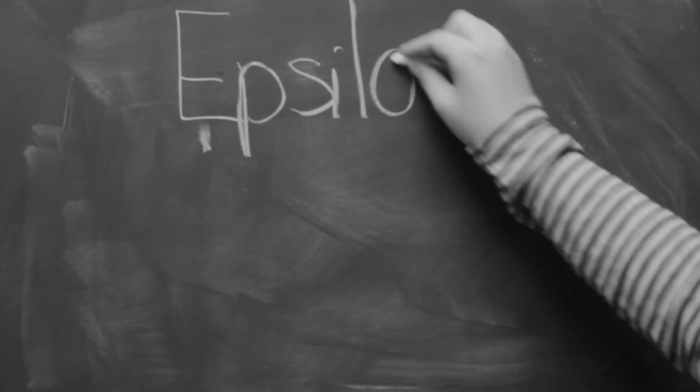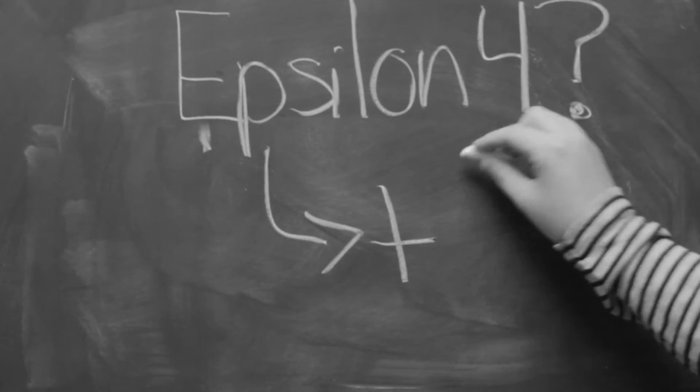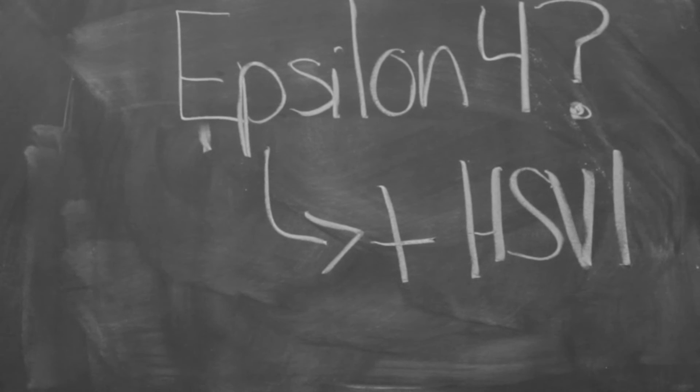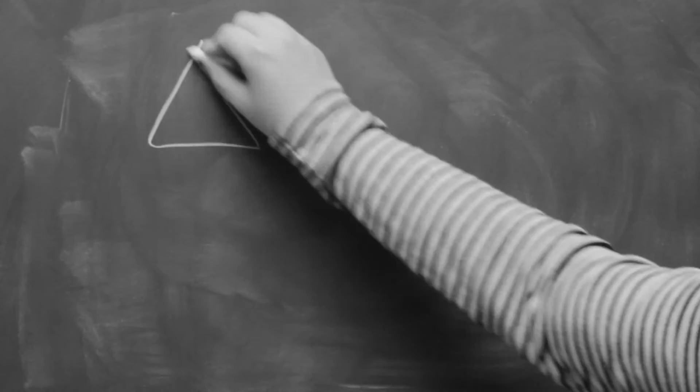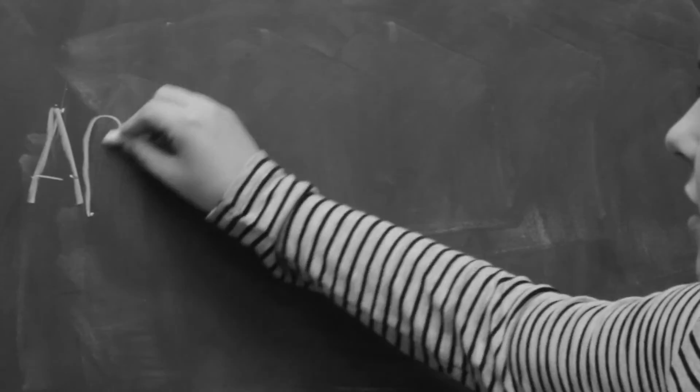Remember how we talked about the ApoE mutated variant Epsilon-4? Well, studies have shown that patients who have this mutation as well as infection by HSV increase the chances of developing Alzheimer's by 12 times, and there is even more evidence.